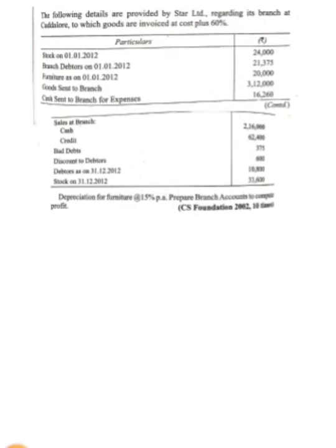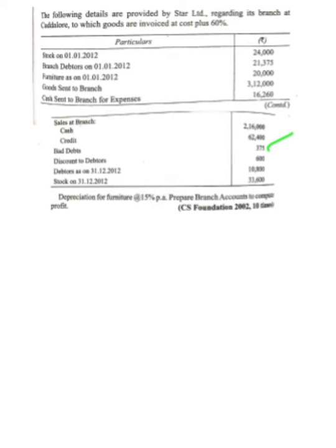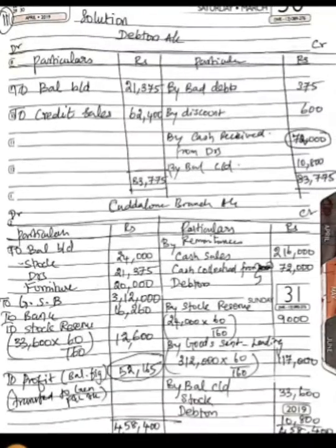Opening balance of debtors: 21,375 on the debit side; closing debtors: 10,800 on the credit side. Credit sales: 62,400 — record that on the debit side. Bad debts: 375 and discount: 600 — record both on the credit side. We have recorded opening balance, closing balance, credit sales, bad debts, and discount. Let us proceed.